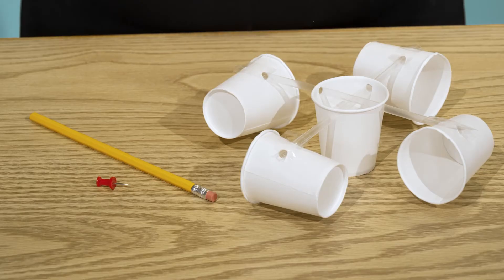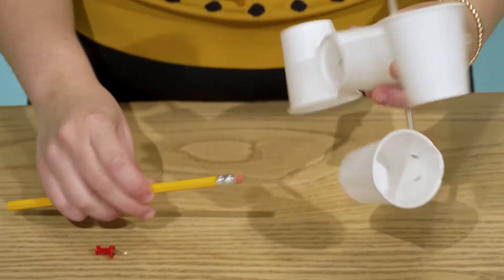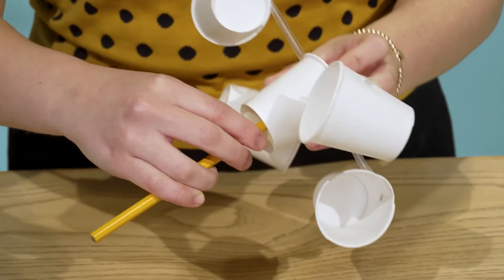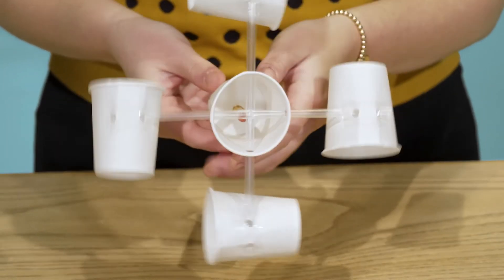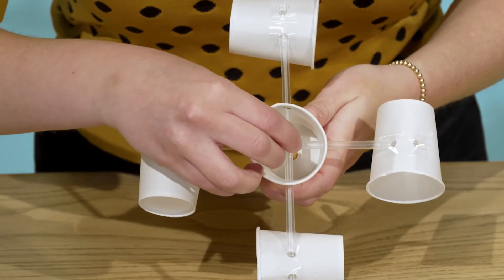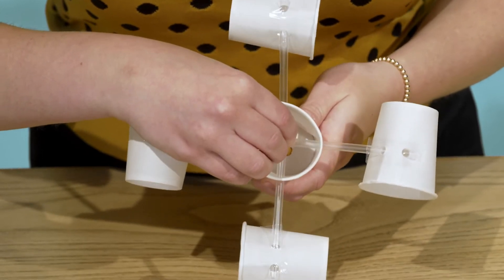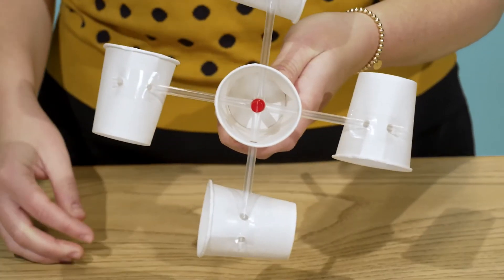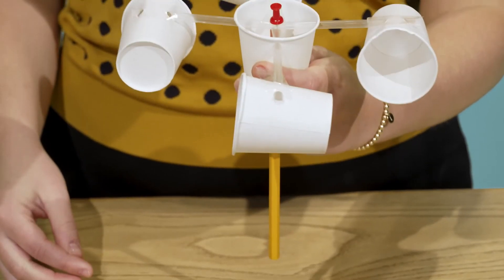We're almost done. Take your unsharpened pencil with a good eraser and push the eraser end through the hole you made in the bottom of your center cup. Press your pushpin through the two straws where they crisscross and secure it lightly in the pencil eraser. Don't push it in all the way or the cups won't be able to spin.